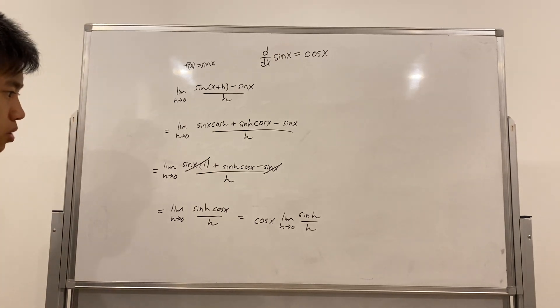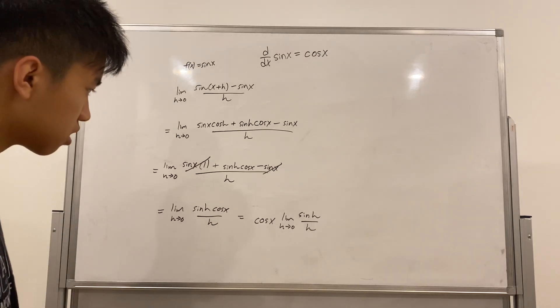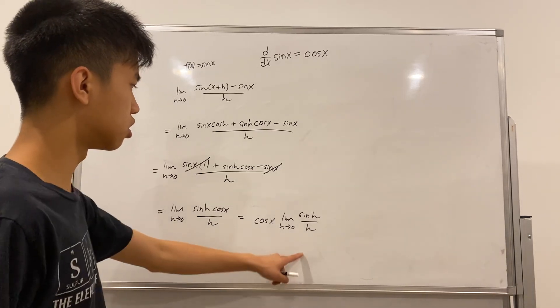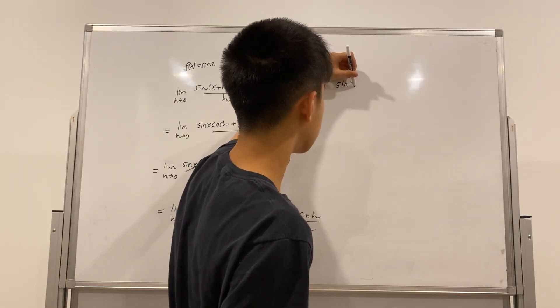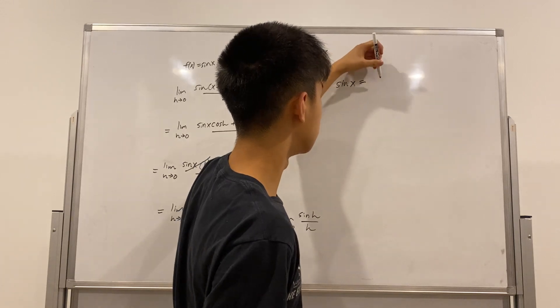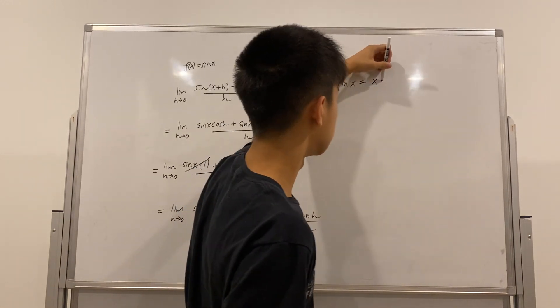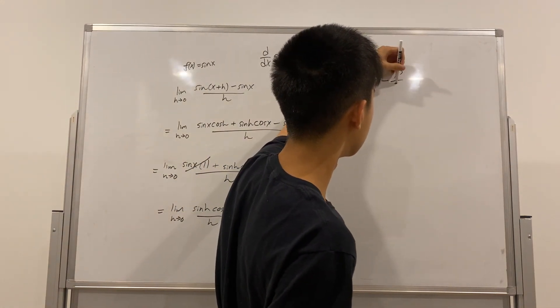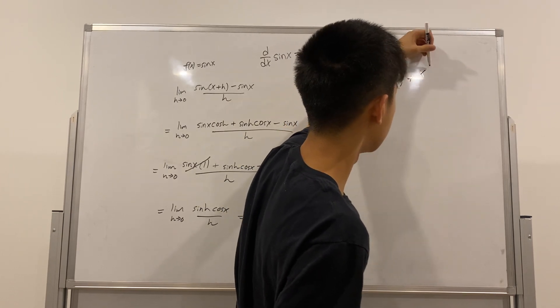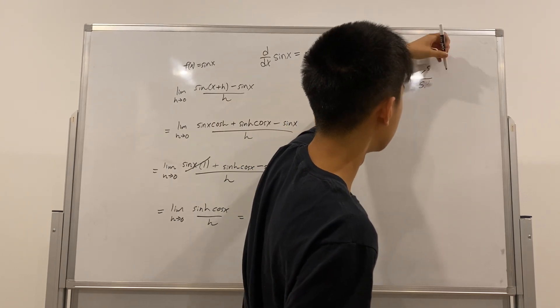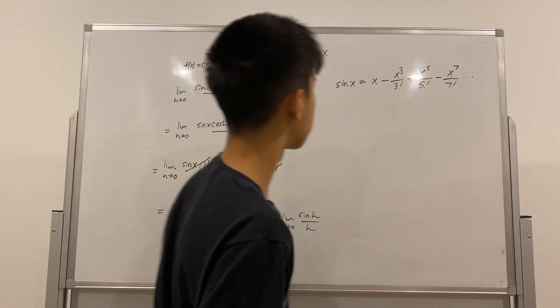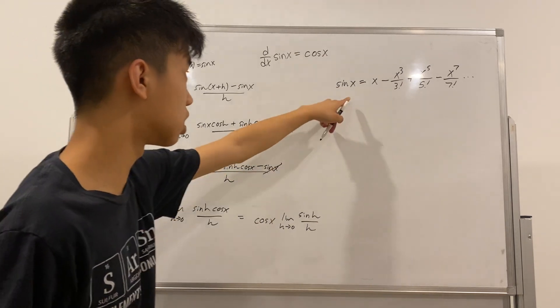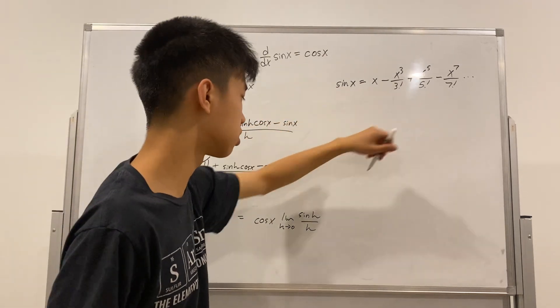We could use something known as Taylor series. So, the Taylor series, we all know sine of x is equal to x minus x cubed over 3 factorial plus x to the 5th over 5 factorial minus x to the 7th over 7 factorial and so on. So, we could substitute in h into this Taylor series.